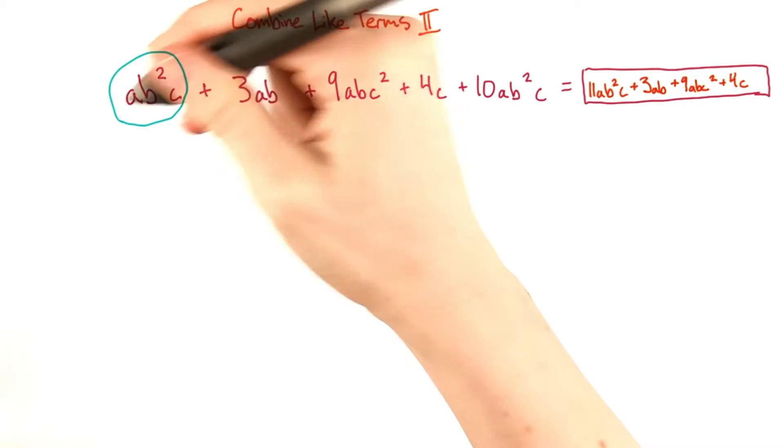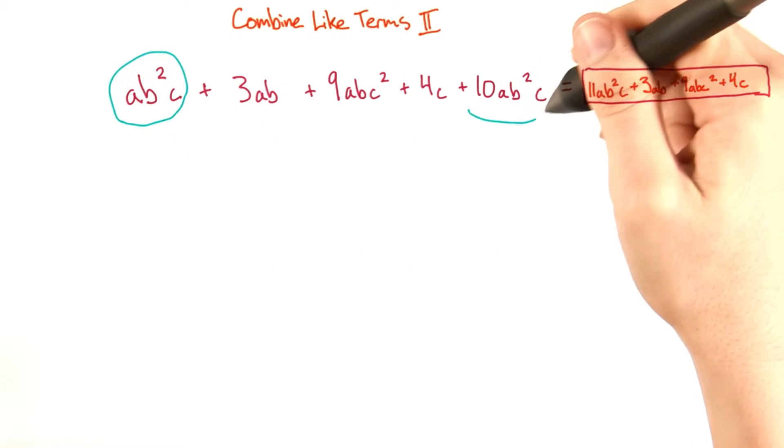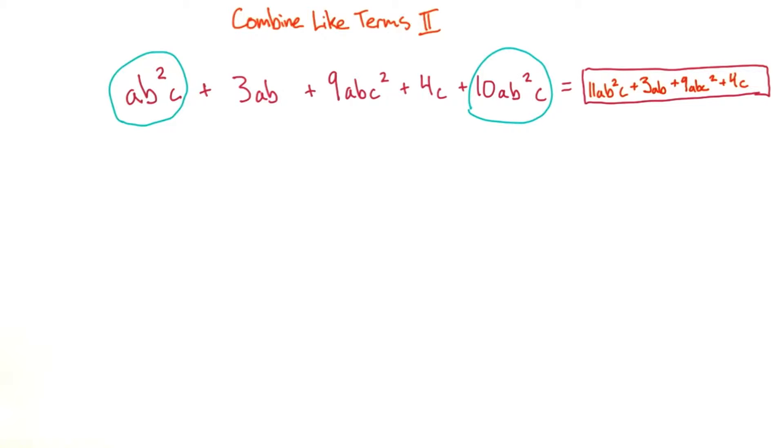ab squared c and 10ab squared c are like terms. And it looks like there are no other like terms, so everything else can stay how it is and we'll just rearrange these so the like terms are next to each other.